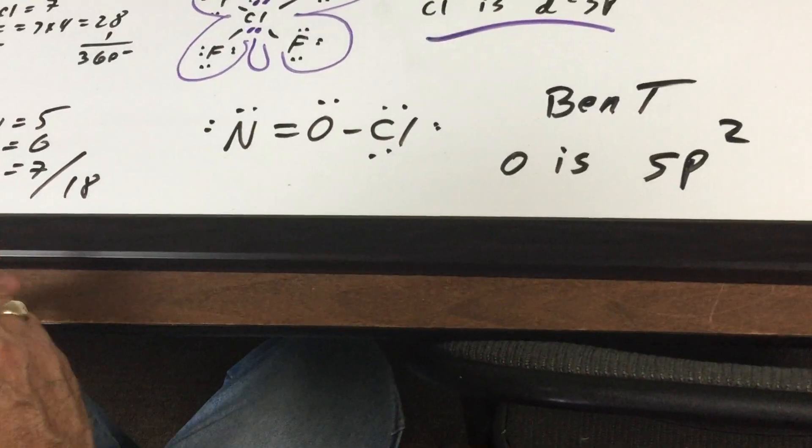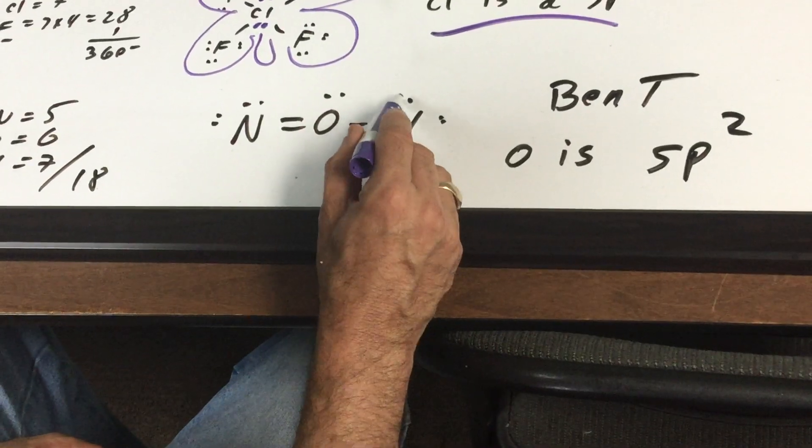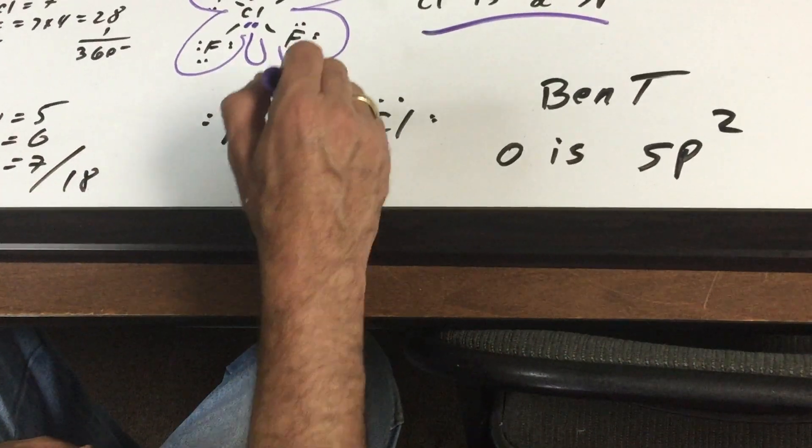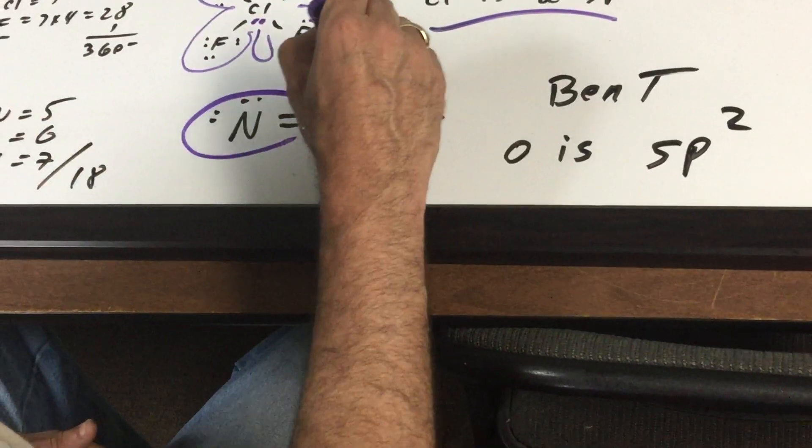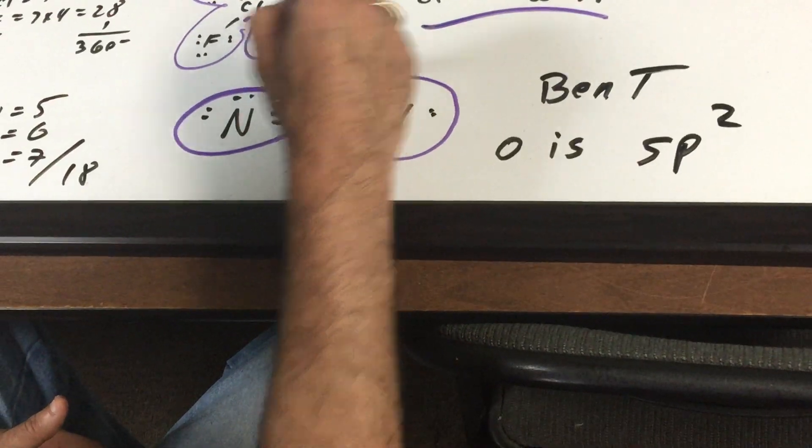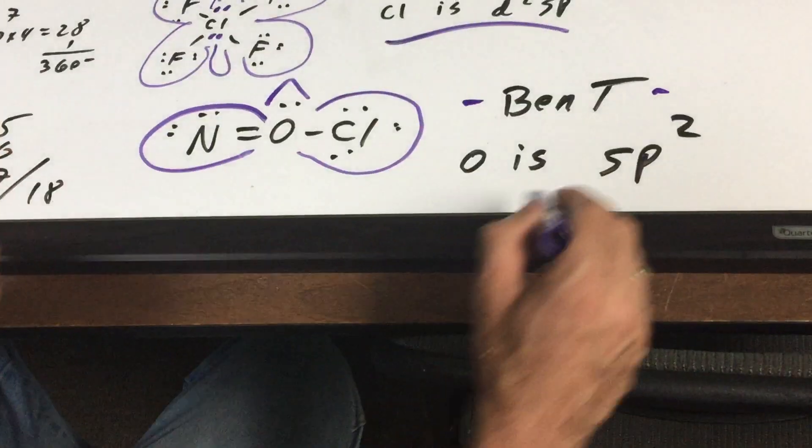But the key thing is to look for 18, and we get two, four, six, eight, ten, twelve, fourteen, sixteen, eighteen. As you can see, the central atom, notice there's two bonded areas and one lone pair. This is called bent. And this particular bent, since there's three areas of space, would be sp2 hybrid on the oxygen.